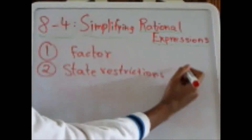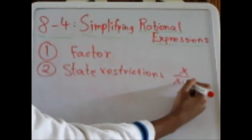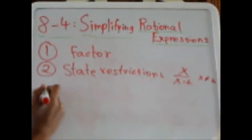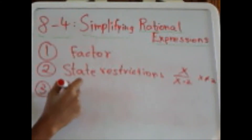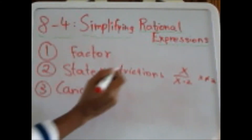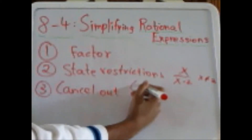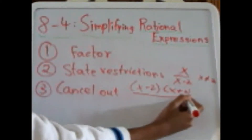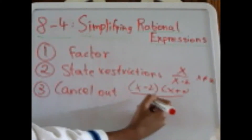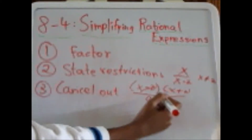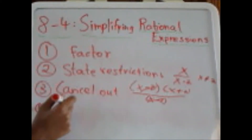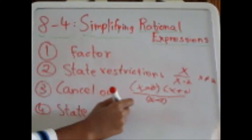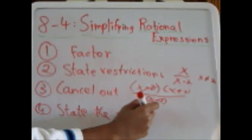For example, in x over x minus 2, the restriction is that x cannot equal 2. The third step is to cancel out anything that is visible in both the numerator and the denominator. For example, in x minus 2 times x plus 2 over x minus 2, the x minus 2 can be cancelled out. The fourth step is to state the answer with the restriction.